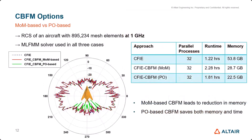Looking at the table with CBFM enabled, there is a reduction in memory for both the MOM-based and PO-based approaches; however, in both cases there is a slight increase in simulation runtime. This tells us that if you want savings in both memory and time, the problem should be electrically even larger — like the ship at more than 100 wavelengths, where we saw reduction in both. Here we see reduction only in memory. Still, if you have a machine with limited resources where you cannot run the problem because of memory, you can take advantage of CBFM for those problems.